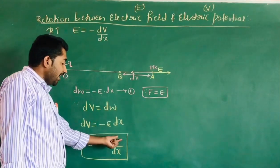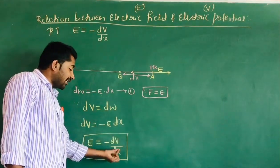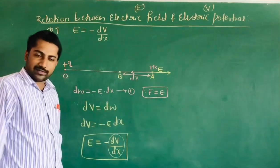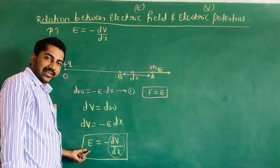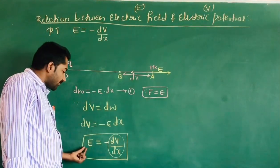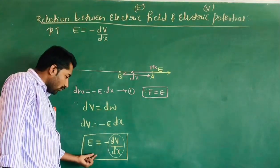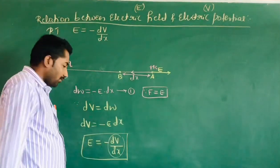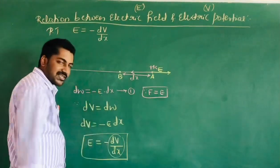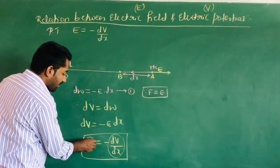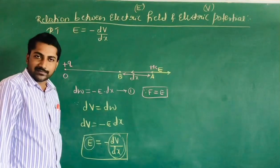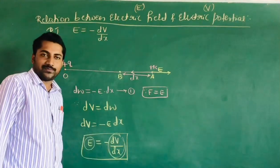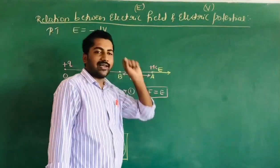Here dV divided by dx indicates the potential gradient at that point. Hence the electric field at that point is equal to the negative potential gradient at that point. Therefore E is equal to minus dV divided by dx. This is the relation between electric field and electric potential.